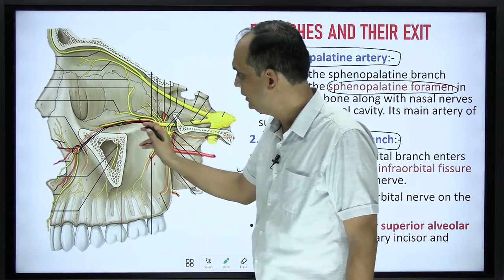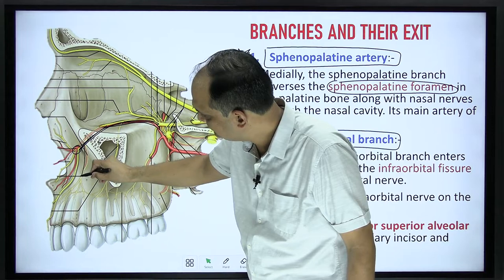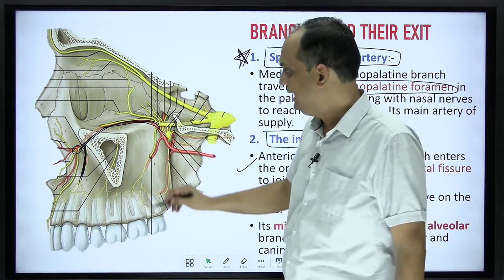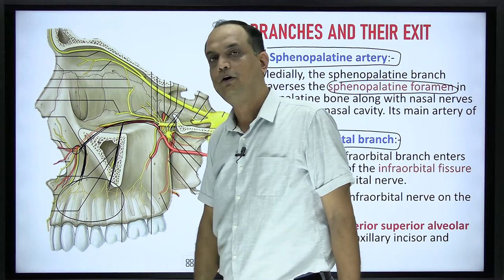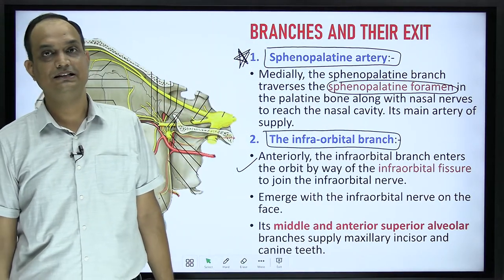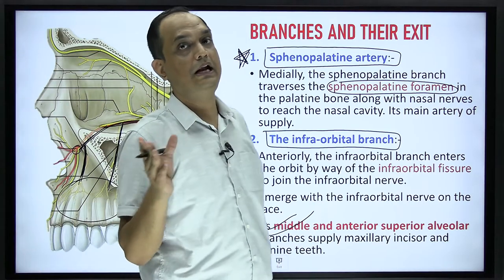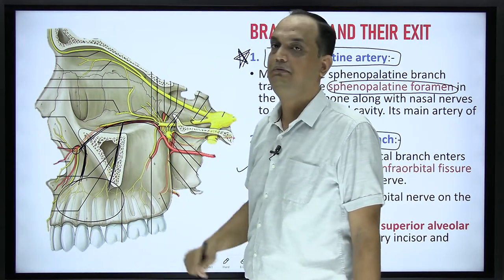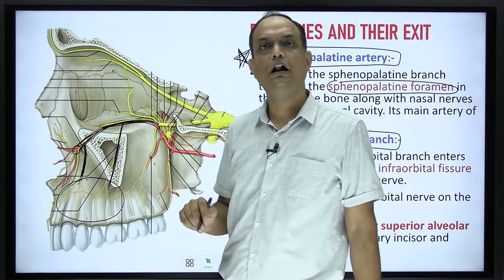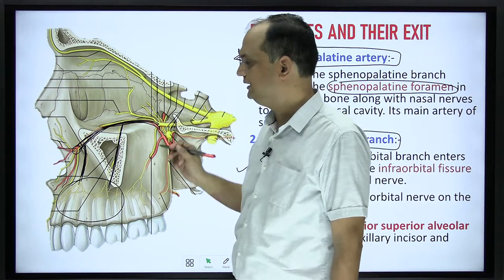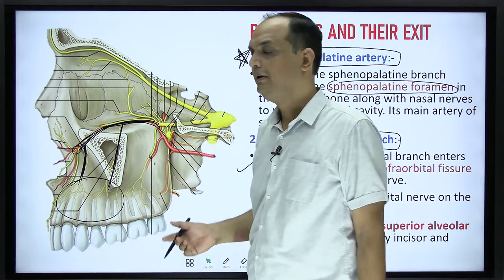In its course through the floor of the orbit, the infraorbital artery gives two more branches. One is known as the anterior superior alveolar artery and sometimes it gives a middle superior alveolar artery. These two arteries will supply the pulp of the anterior teeth, meaning your incisors and canines. So you have to understand that there are three superior alveolar arteries. The anterior superior and middle superior alveolar arteries are branches of the infraorbital artery, and these infraorbital arteries run along with the infraorbital nerve.